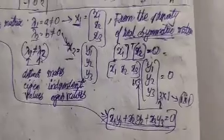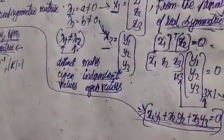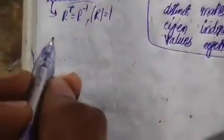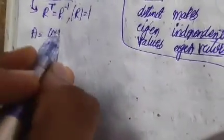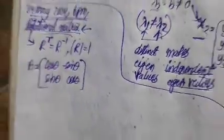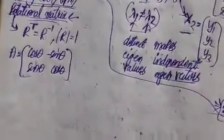This video is about the rotational matrix, which is a type of square matrix. The property of this rotational matrix is that its transpose equals its inverse, and its determinant equals 1. One example of a rotational matrix is: cosine theta, negative sine theta, sine theta, cosine theta.